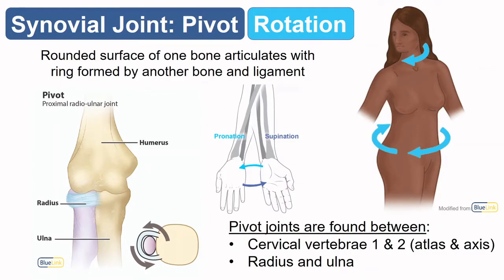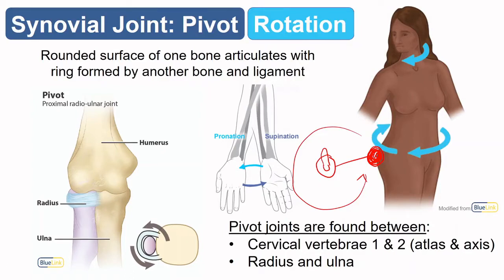The next joint is a pivot joint. Think of a skip-it toy: a plastic loop goes around your foot with a long string and a heavy part on the other end, and you swing it around and jump over it. Similarly, in a pivot joint a round bone sits inside a ring formed by a combination of ligaments or bones. We see this at the elbow, where a ligament forms a ring around the round portion of the radius.